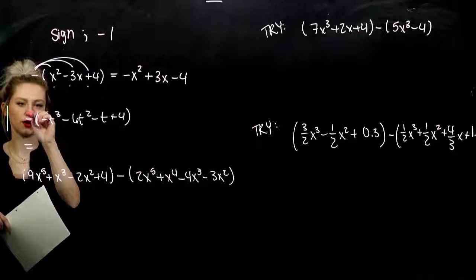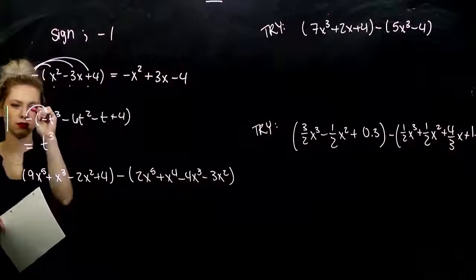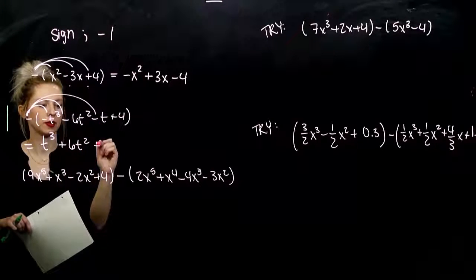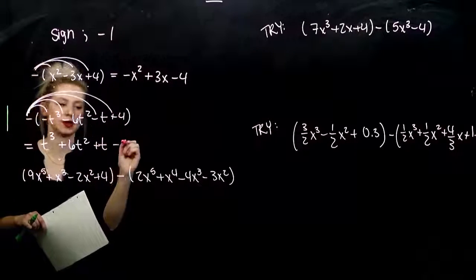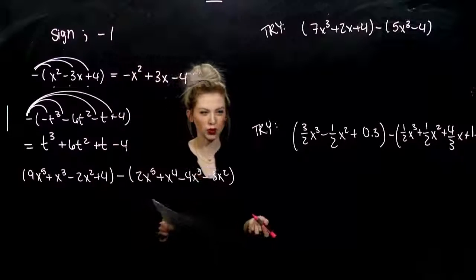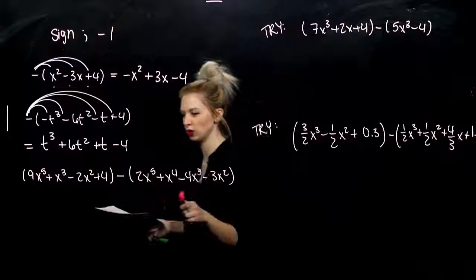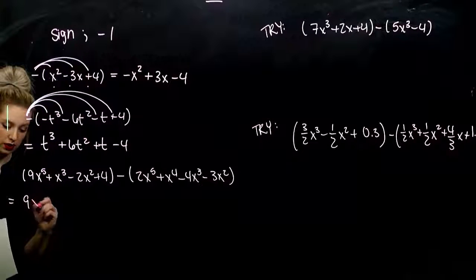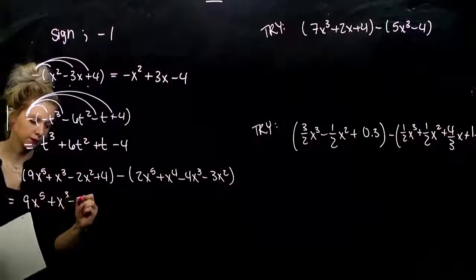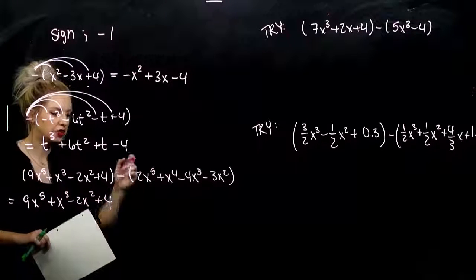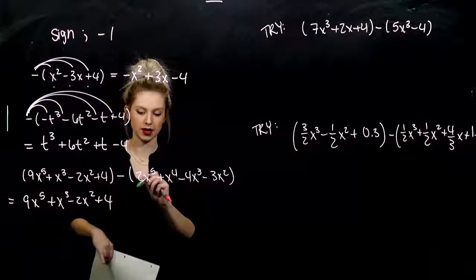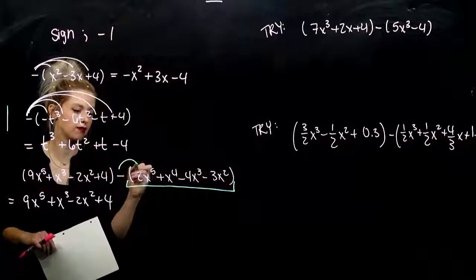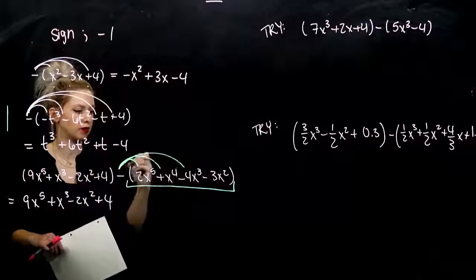Let's simplify this second one. Negative times a negative is positive. Negative times a negative is positive. Negative times a negative is positive. Negative times a positive gives us a negative. This is what's really going on when we're subtracting two polynomials. The first parentheses don't matter — copy that down exactly. But in the second chunk, yes, they do matter, because I need to distribute that negative to every single term.